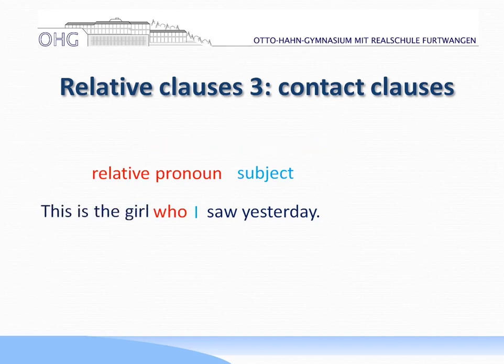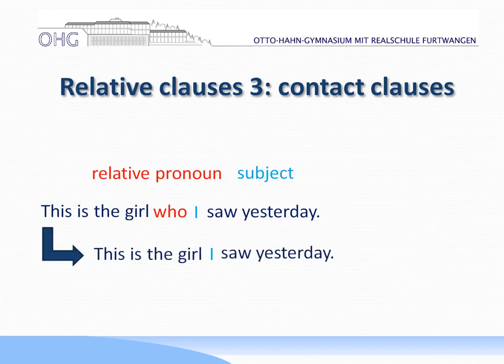Now if we go specifically to the second sentence: here 'I' is the subject, so the subject is not the relative pronoun. And that is important, because in this case you can leave out the relative pronoun 'who.' And then it is a contact clause: 'This is the girl I saw yesterday.'